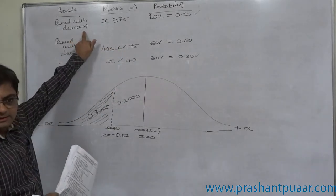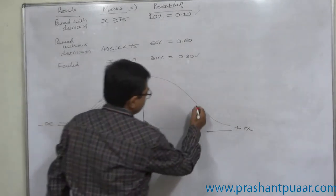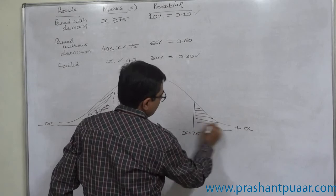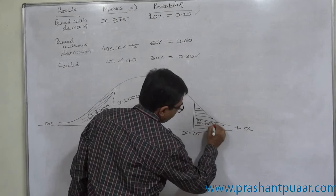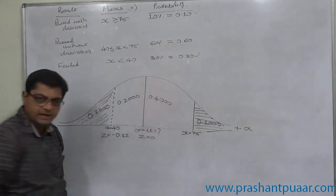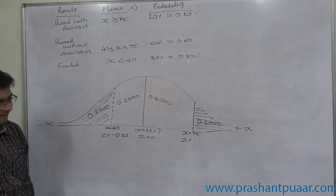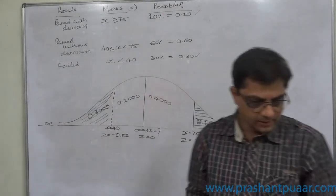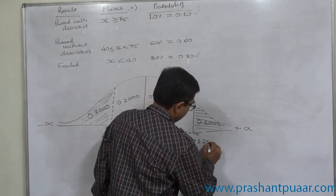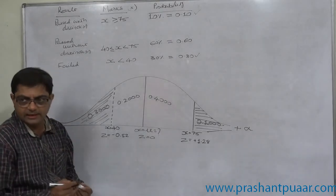The students who passed with distinction scored marks of 75 or more — they are the top 10%. X equals 75 is on the right-hand side, and the area beyond 75 is 0.1. That means the remaining area between the mean and 75 is 0.4. Looking up the area nearest to 0.4 in the Z-table, the relevant value of Z is 1.28. This is the reverse process of using the table.